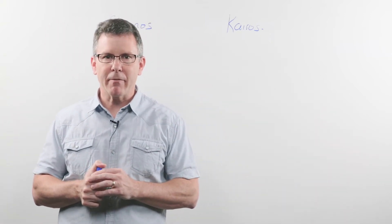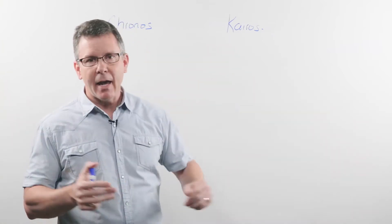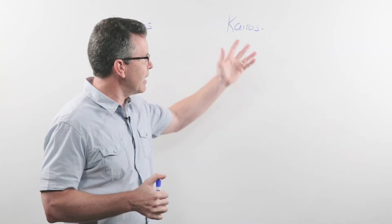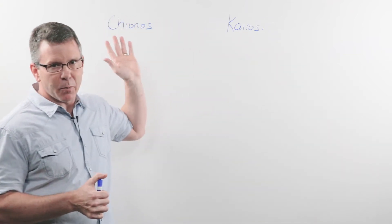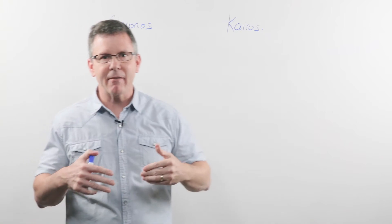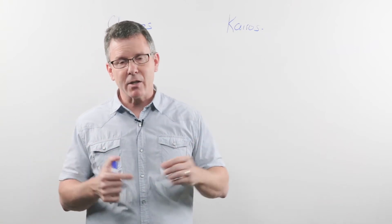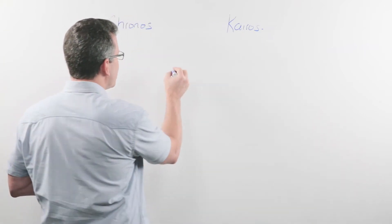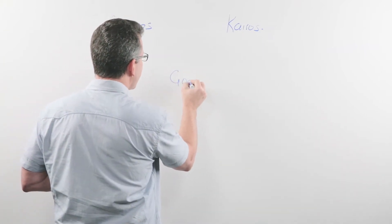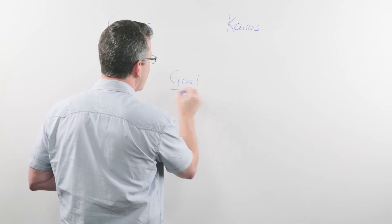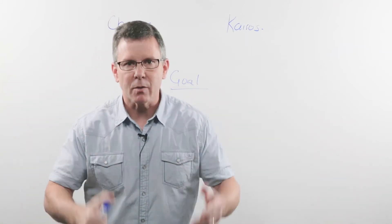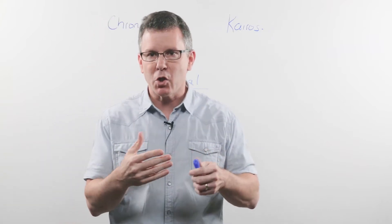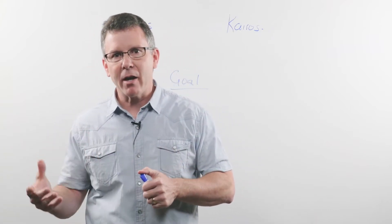Kairos is the word used in Ephesians chapter 5 where it says make the most of every opportunity. So we as leaders have to understand that there are catalytic moments in life and there are discipline issues in life, and we need to take advantage of both. As I train leaders, here's what I tell them to do: first, choose their goal. What is it that you want to accomplish? Your goal could be a personal goal in the area of physical discipline or perhaps spiritual discipline, maybe a marriage issue.